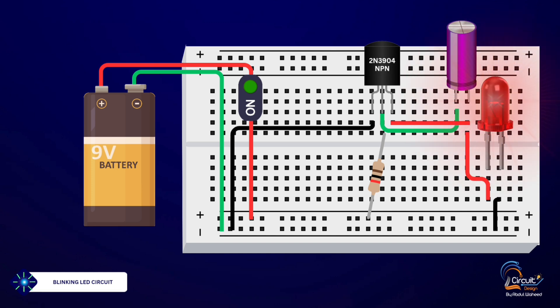Hi everyone, welcome back to Circuit Designed by Abdul Wahid. Today I'm going to show you how to make a simple blinking light emitting diode circuit using a capacitor, a transistor, and a few other basic components. Let's get started.